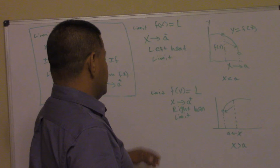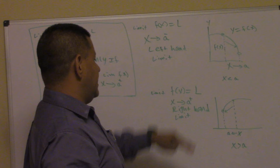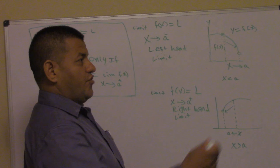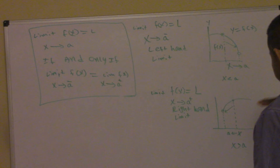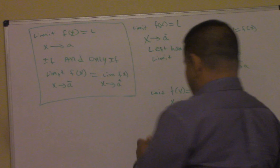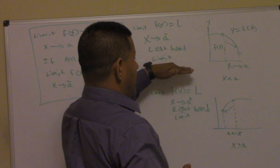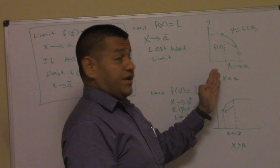The next one is the right-hand limit. The right-hand limit is: the limit of f(x) equals L as x approaches a from the positive side. It's called the right-hand limit because we're going from right to left. On the left-hand limit, we're going from left to right.